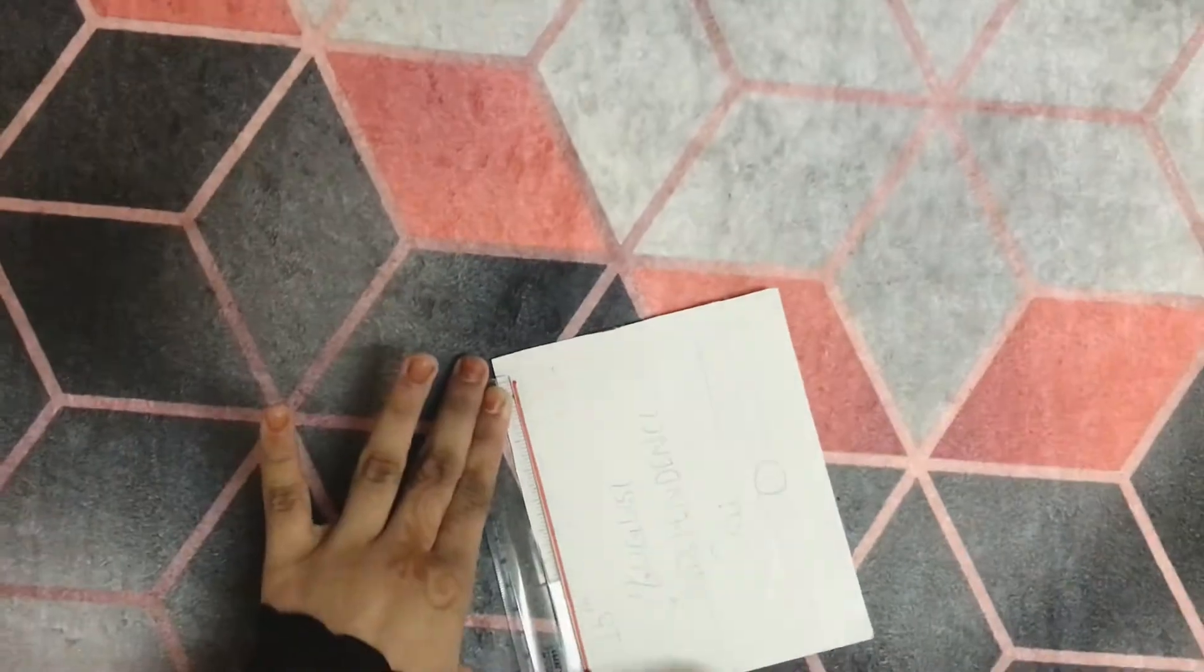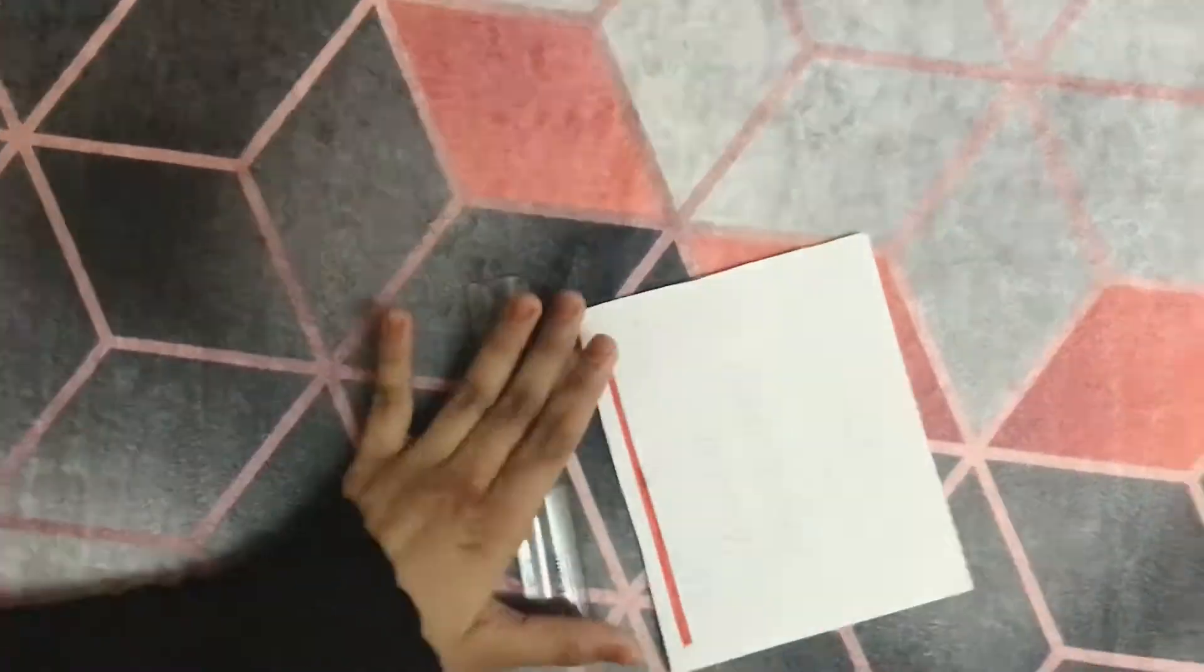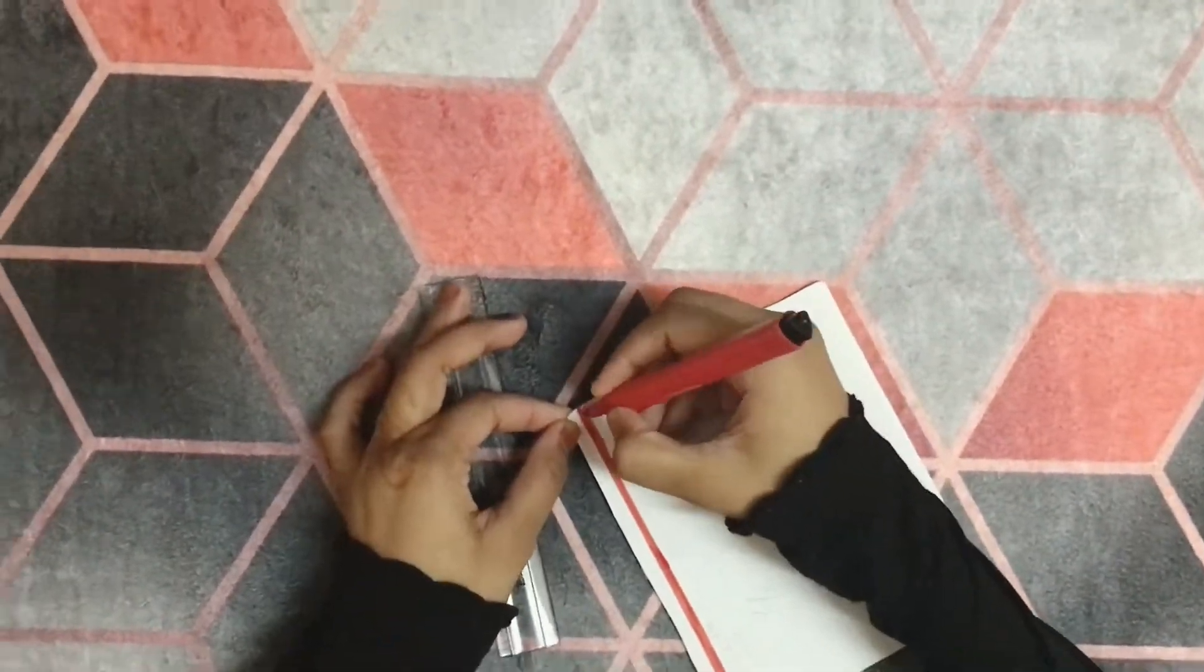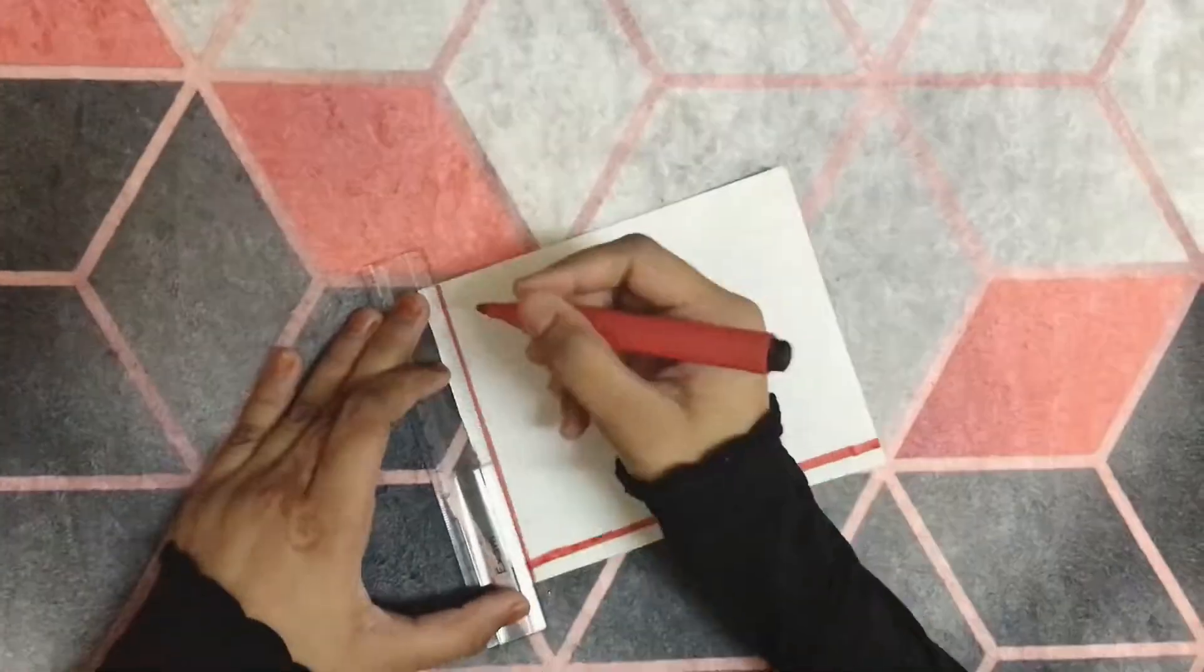Then I am going to draw a border on the cardboard using red color sketch pen and scale. You could also make the border black color. I'm making my border thick; you could also make it thin.